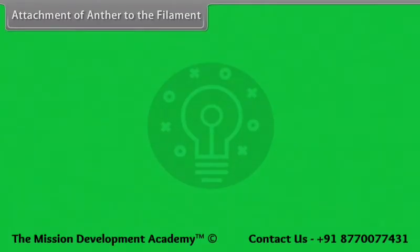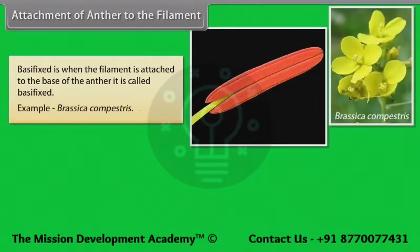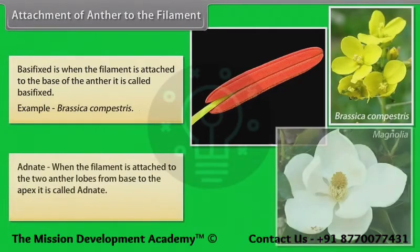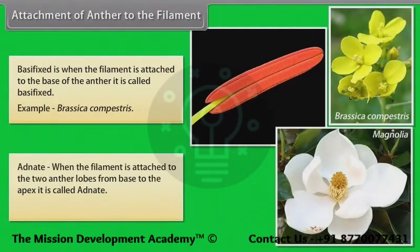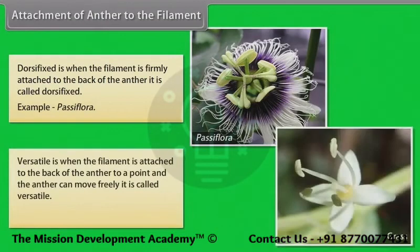Attachment of anther to the filament: Basifixed — filament attached to the base of the anther, example Brassica campestris; Adnate — filament attached to the two anther lobes from base to apex, example Magnolia; Dorsifixed — filament firmly attached to the back of the anther, example Passiflora; Versatile — filament attached to the back of the anther at a point so the anther can move freely, example grass.